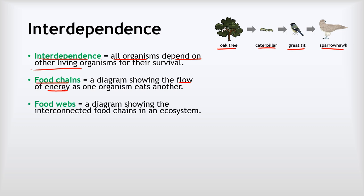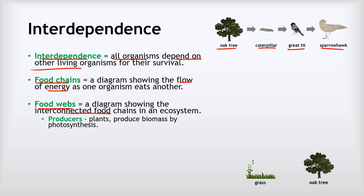More complicated than food chains, we've got food webs. These show all of the interconnected food chains in an ecosystem — for example, a woodland ecosystem. The producers in a food web are the bottom level. These are the things producing biomass, and that's essentially just plants producing biomass by photosynthesis. Biomass is essentially living matter. In our food web, grass and oak trees are the producers, and they are the ultimate source of all the rest of the food in the food web.